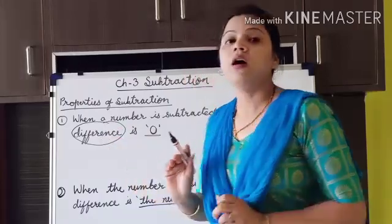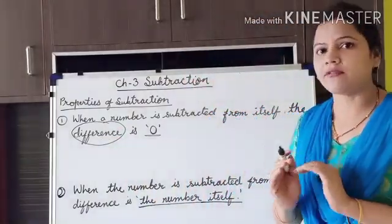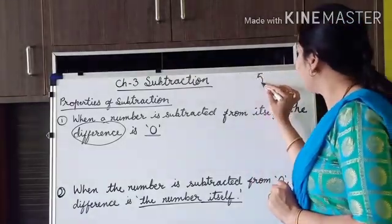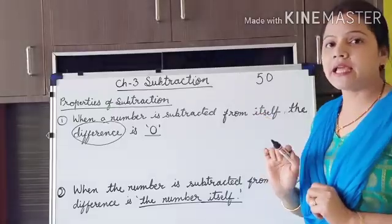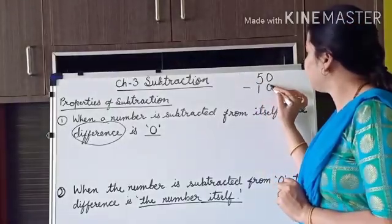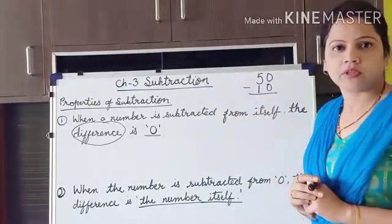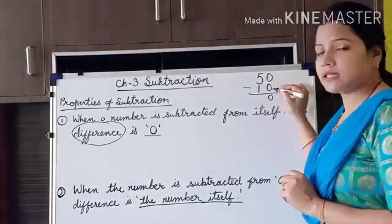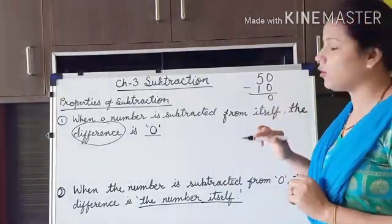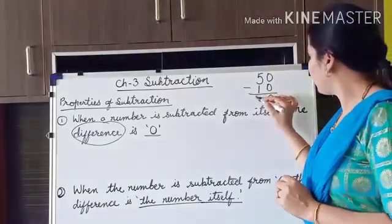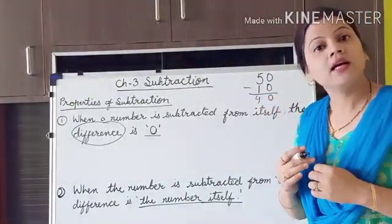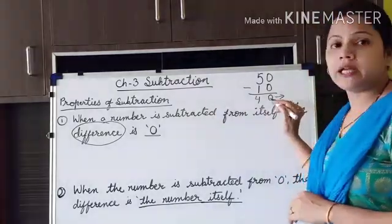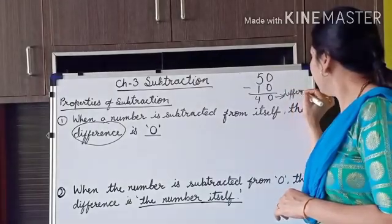Difference is the result that we get after the subtraction of 2 numbers. Suppose I have 50 chocolates and I have to give 10 chocolates to someone. Then how many chocolates am I left with? 0 minus 0 is 0, and 5 minus 1 is 4, so there are 40 chocolates with me. This 40 chocolates is the difference.